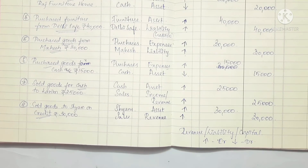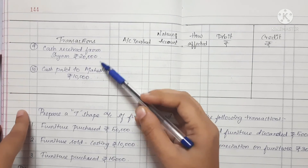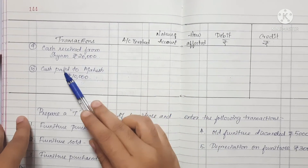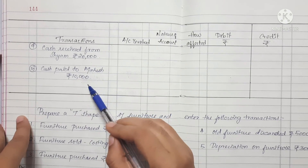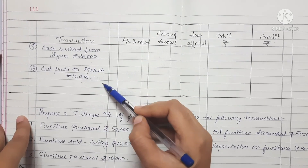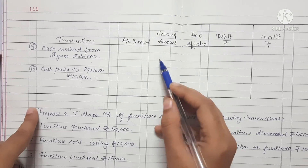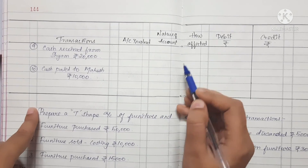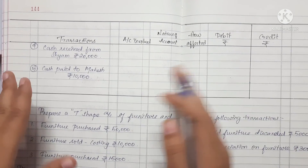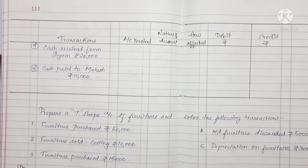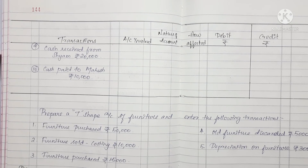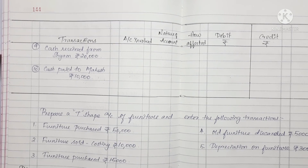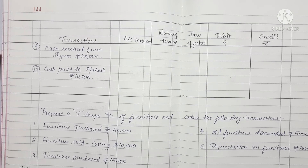We can review two more transactions as practice: cash received from Sham Rs. 20,000, and cash paid to Mugash Rs. 10,000. Fill in the accounts involved, nature of accounts, how affected, and debit or credit in the comment box. Subscribe to our channel if you miss any video. Stay tuned for more videos — keep watching, keep learning, thank you.